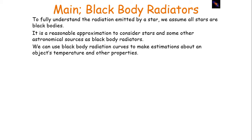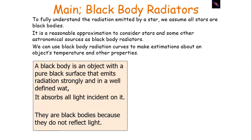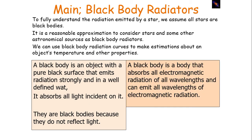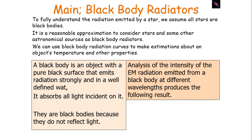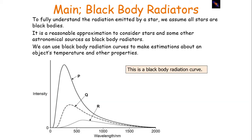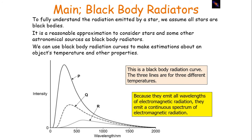We can use black body radiation curves to make estimations about an object's temperature and other properties. A black body is an object with a pure black surface that emits radiation strongly and in a well-defined way — it absorbs all light incident on it. Black bodies do not reflect light. A black body absorbs all electromagnetic radiation of all wavelengths and can emit all wavelengths of electromagnetic radiation. An analysis of the intensity of the electromagnetic radiation emitted from a black body at different wavelengths produces what we call a black body radiation curve. Because black bodies emit all wavelengths, they have a continuous spectrum, leading to a continuous curve.